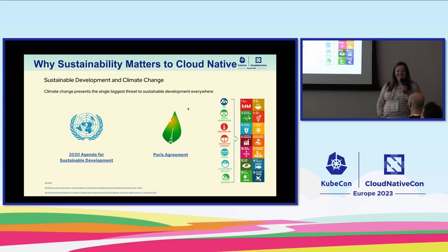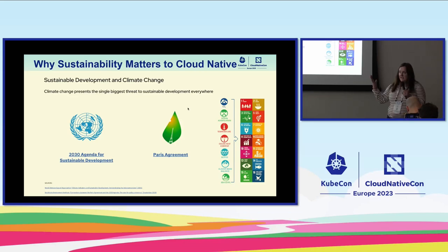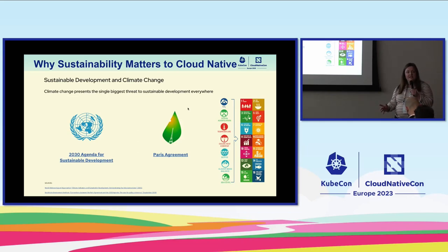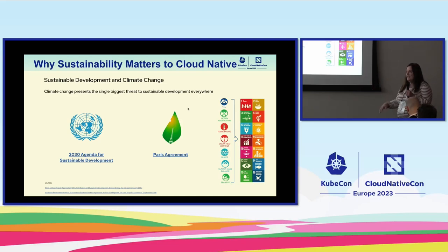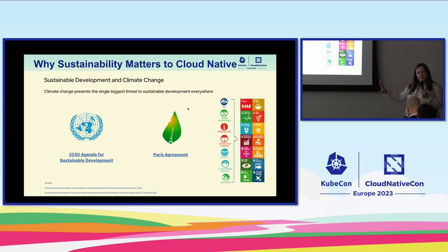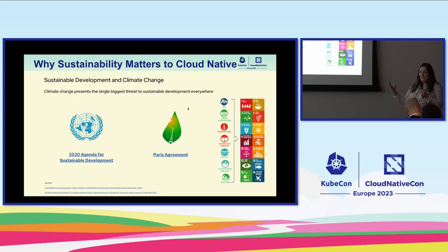Why does sustainability matter? If you're not familiar, there are two important things to be aware of: the 2023 Agenda for Sustainable Development, which has 16 goals around ESG — environment, social, and governance — and then the Paris Agreement, also known as the Paris Climate Agreement, which is focused on temperature, greenhouse gas, and carbon emissions. The Agenda for Sustainable Development relates more to the regulation associated with sustainability, implemented by the UN in September 2015.